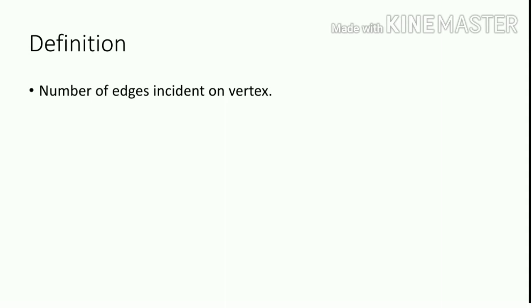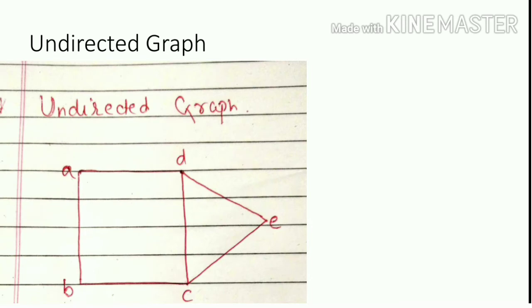There are two types of graphs: undirected graph and directed graph. In an undirected graph, the degree of vertex A is 2.